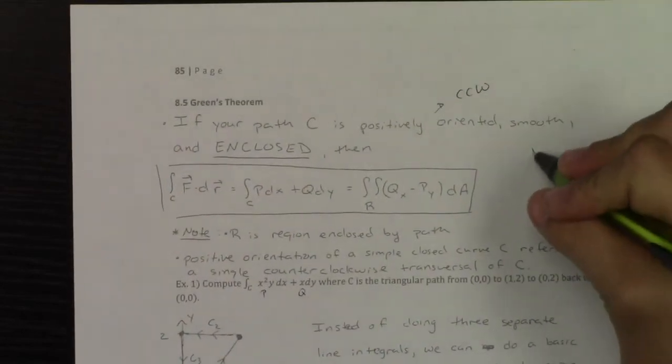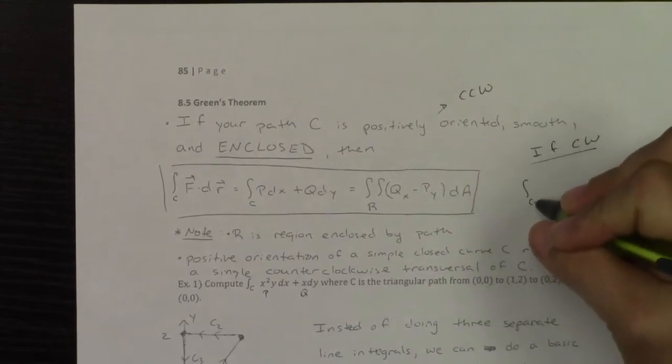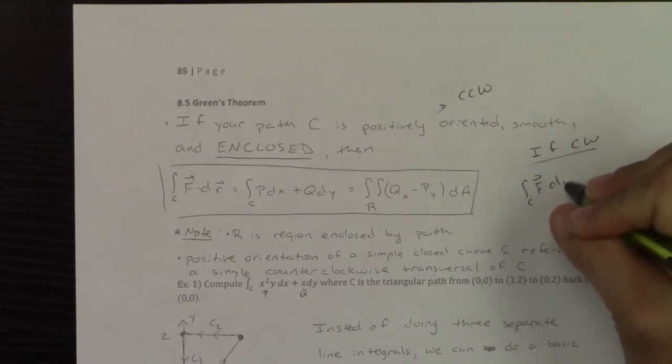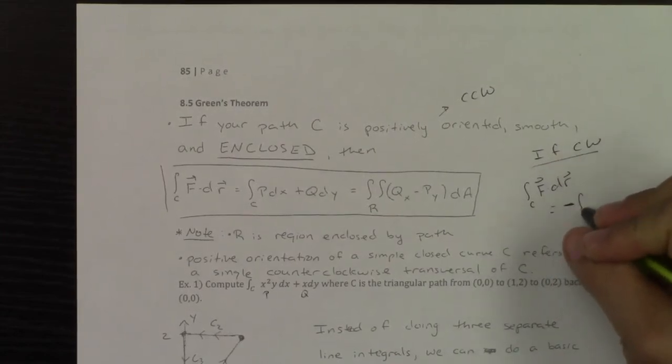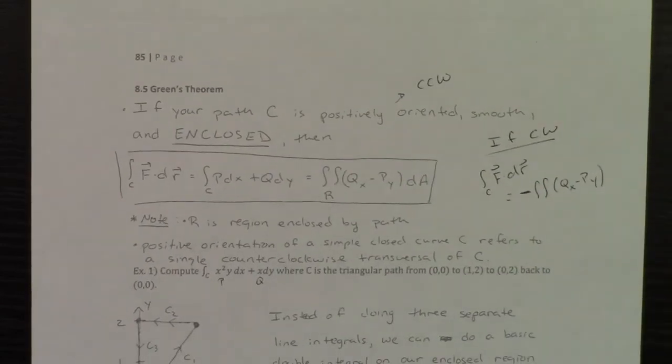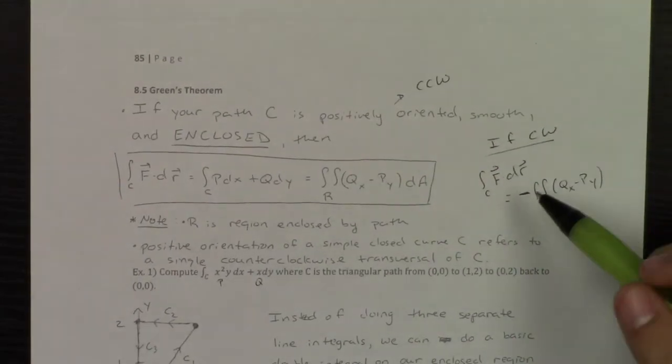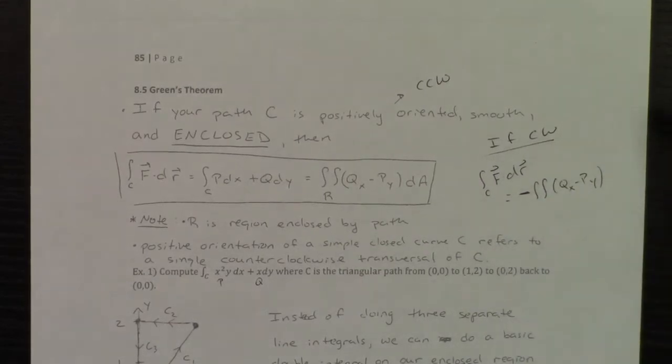So what I'm going to say is that if clockwise, then the line integral of f dotted with dr, you're just going backwards. This would be the negative double integral of qx minus py, or you can say py minus qx. Either way, just know that it's the exact same magnitude, but you're going in the opposite direction.